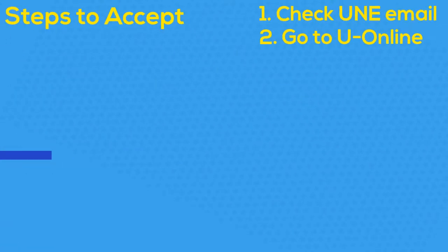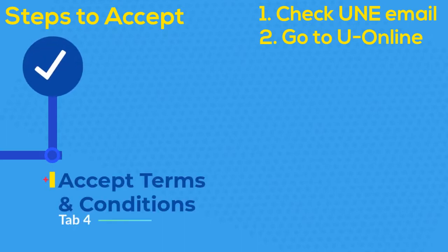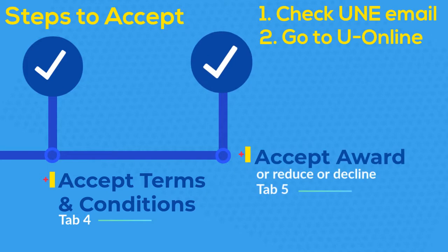Once we email you to let you know your award is ready, you'll need to accept your aid. Go to your UNLINE account and accept the terms and conditions on tab 4, and then accept the award on tab 5.